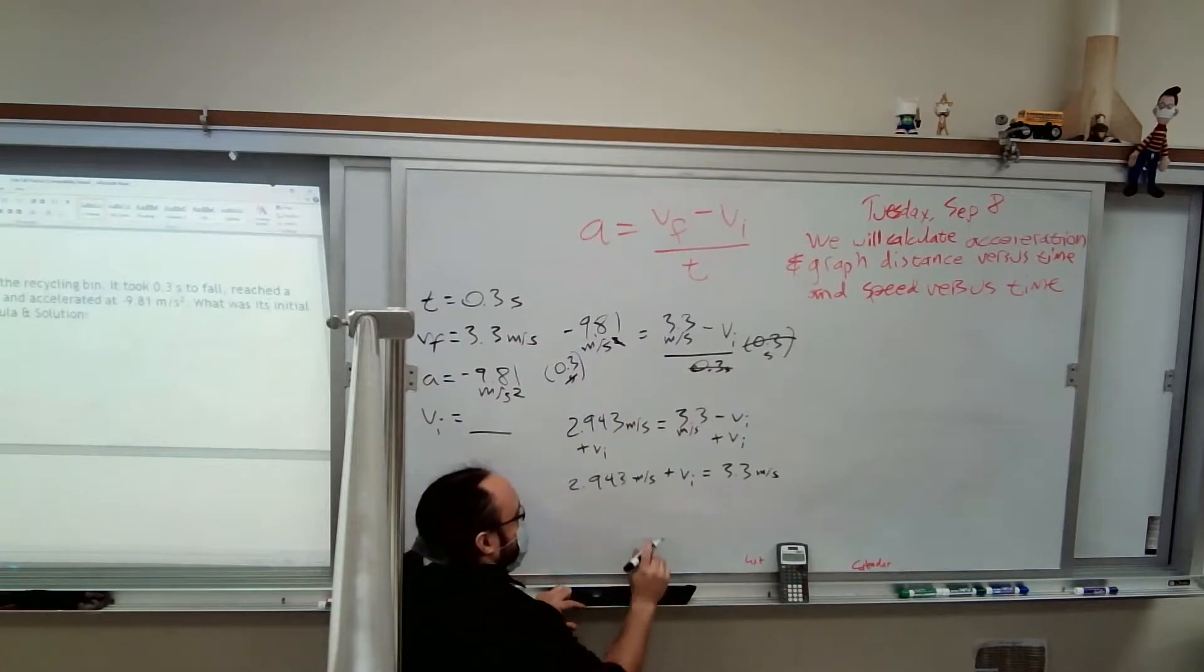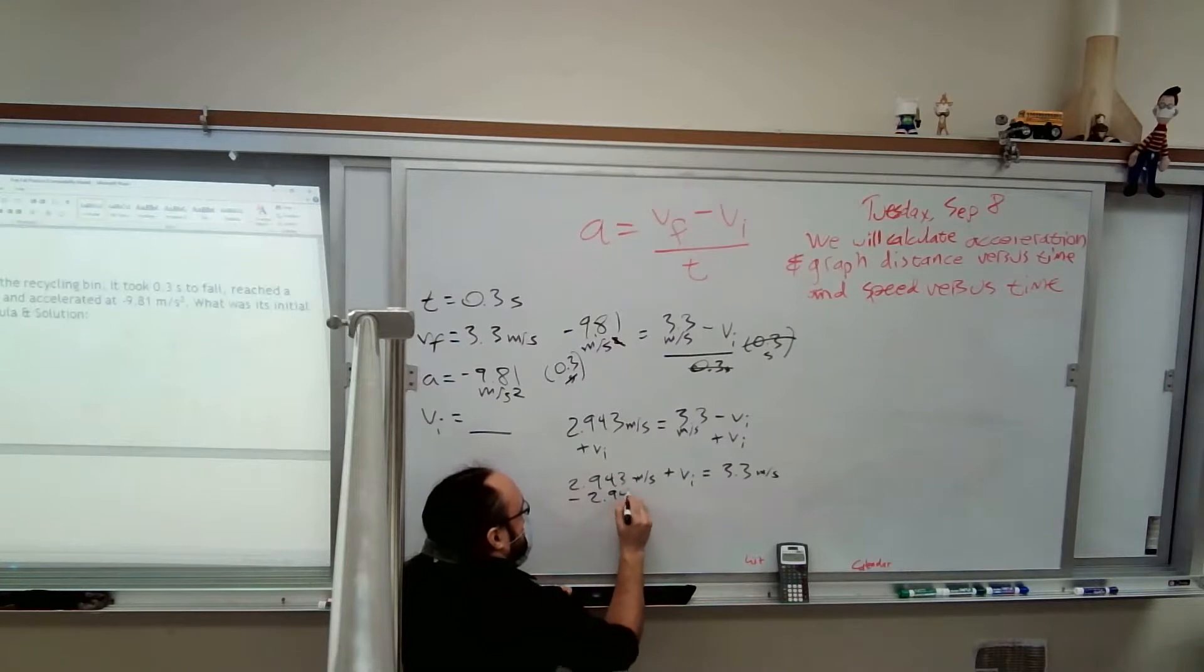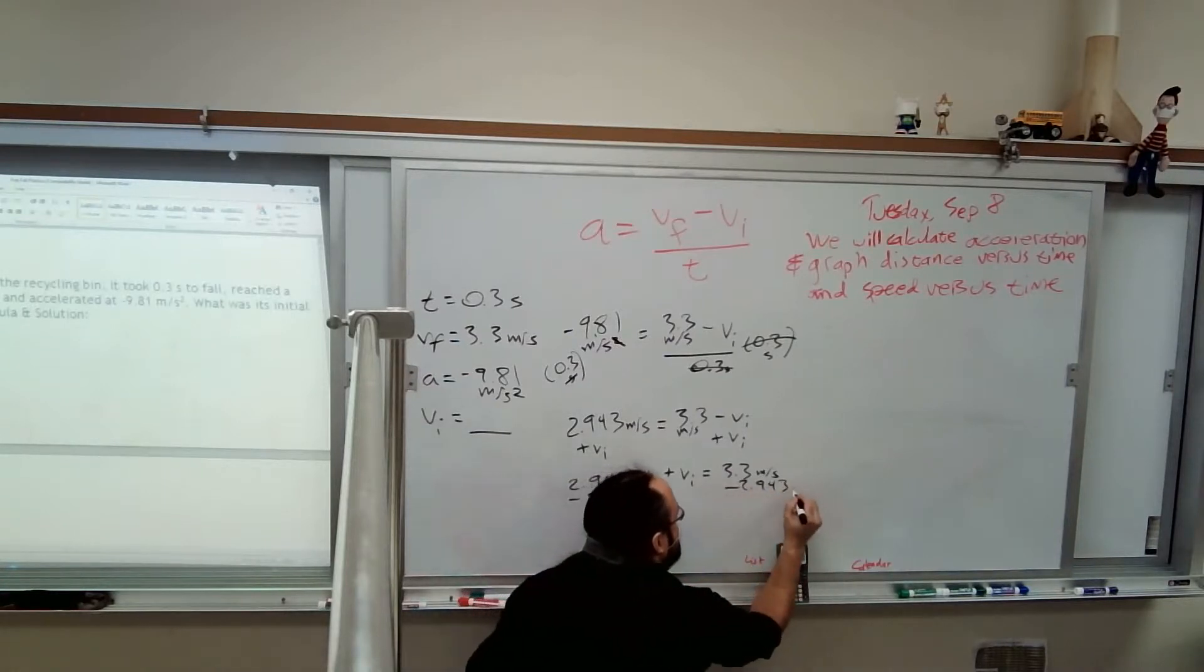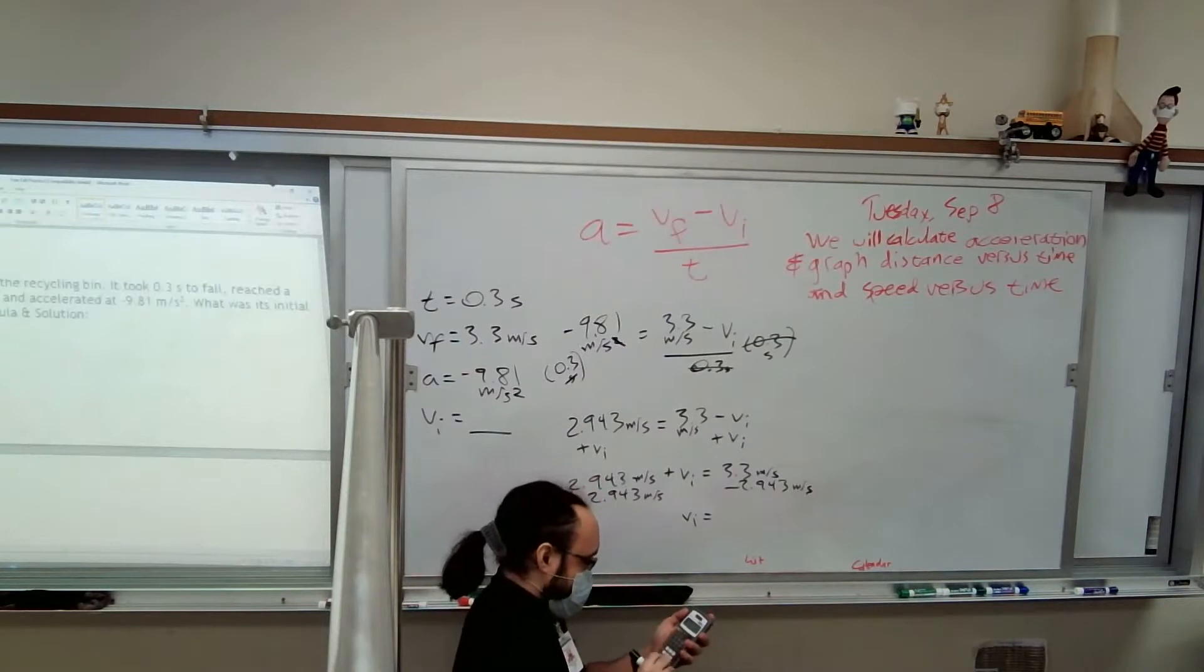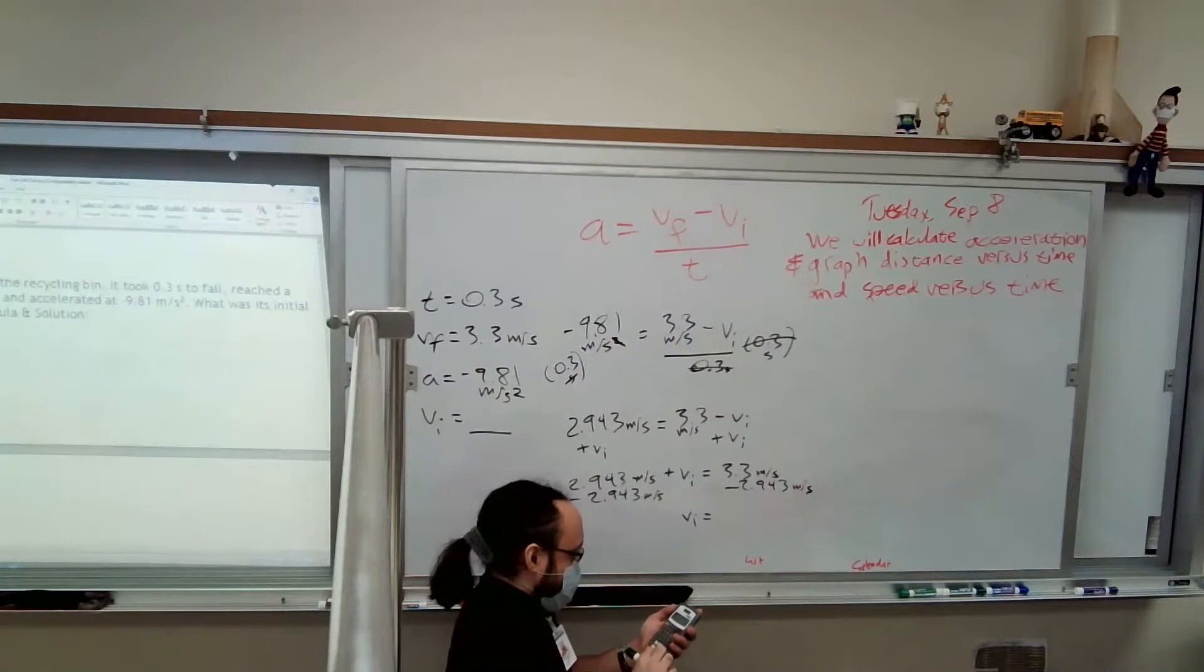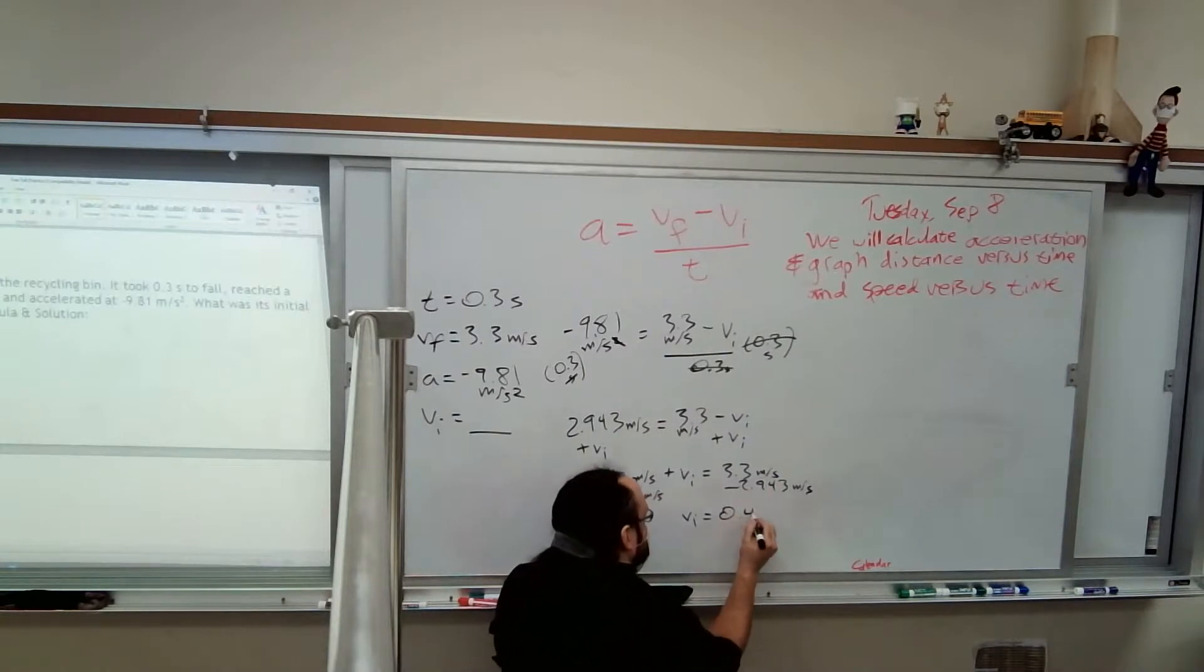Now we're almost there. Now it's going to be a lot easier to get this 2.943 away from the Vi. It says Vi plus 2.943. So I'm going to subtract 2.943. And 3.3 minus 2.943. 0.4.